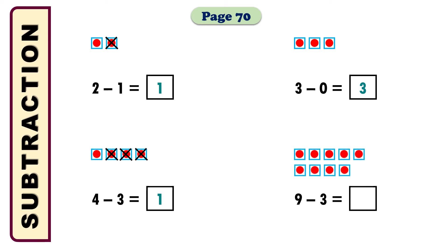The next math says 9 minus 3 equals 6. We will take 9 boxes and we are going to cross 3: 1, 2, 3. After crossing 3 boxes we need to count how many boxes are uncrossed. We can count 1, 2, 3, 4, 5, 6 boxes are uncrossed. That's why we put 6 as the answer. We have taken 9 boxes, crossed 3 among them, and 6 boxes remain uncrossed — so the answer is 6.